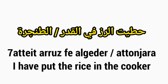Again: Hattait al-Roz fi al-Qidr or fi al-Tunjara. Hattait — I put in the past. Al-Roz — the rice. Fi — in. Al-Qidr — the cooker. Al-Tunjara also means 'the cooker'. The plural of Tunjara is Tanajir. So cooker has two words: Qidr or Tunjara. The full meaning is: I have put the rice in the cooker.